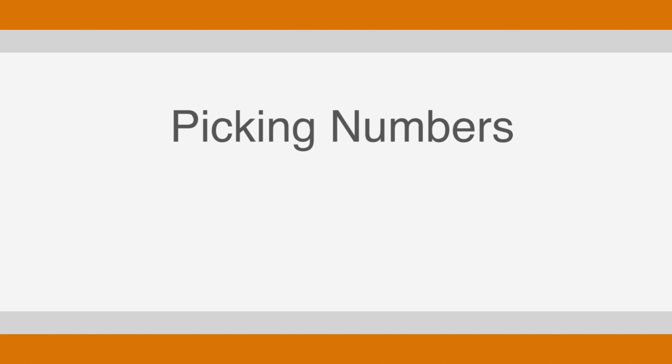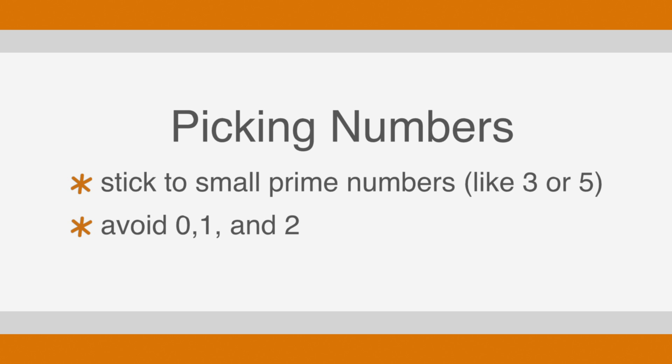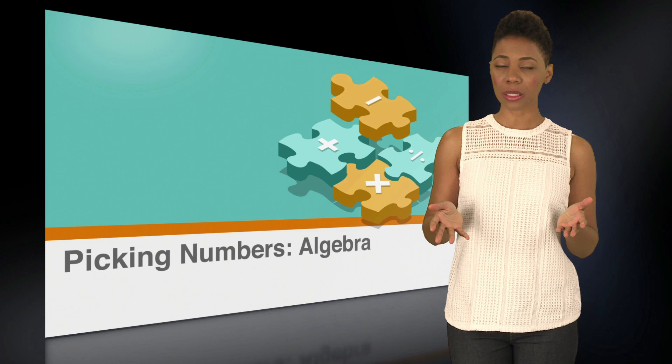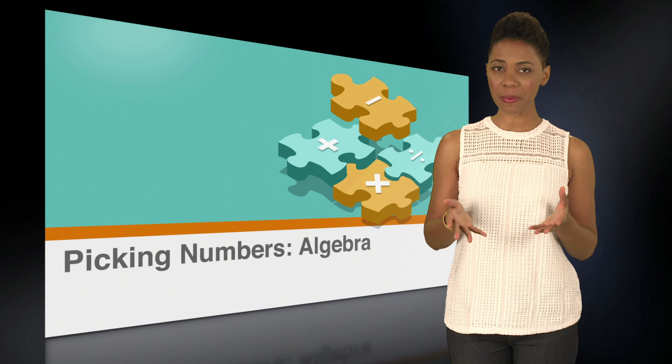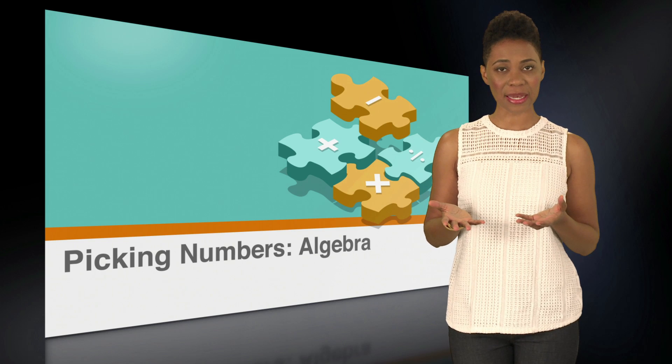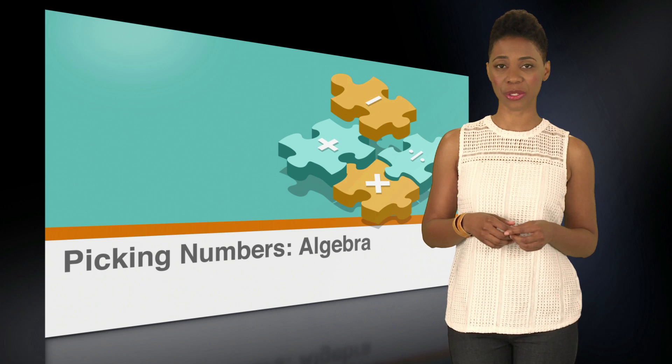Now we're ready to pick numbers. Generally, you should pick small prime numbers like 3 or 5 because these numbers can make problems easier to compute. You can pick any numbers you'd like, but it's best to avoid 0, 1, and 2. It's not because they won't also work, but because the answer choices might not turn out to be unique numbers, and on the ACT there's only one correct answer choice.